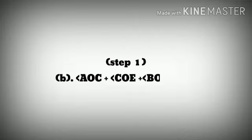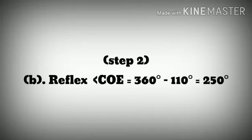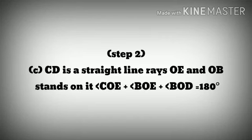Step 2: 70 degrees plus angle COE is equal to 180 degrees. Therefore, angle COE is equal to 180 degrees minus 70 degrees, which equals 110 degrees. Reflex angle COE equals 360 degrees minus 110 degrees, which equals 250 degrees.